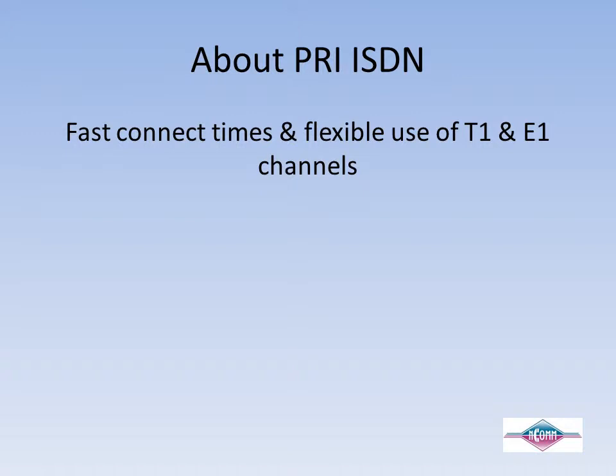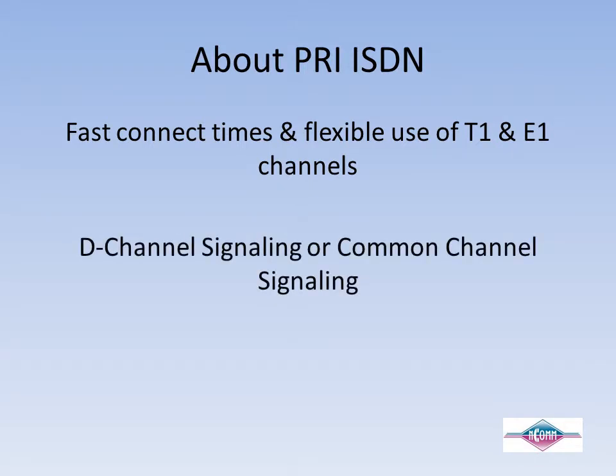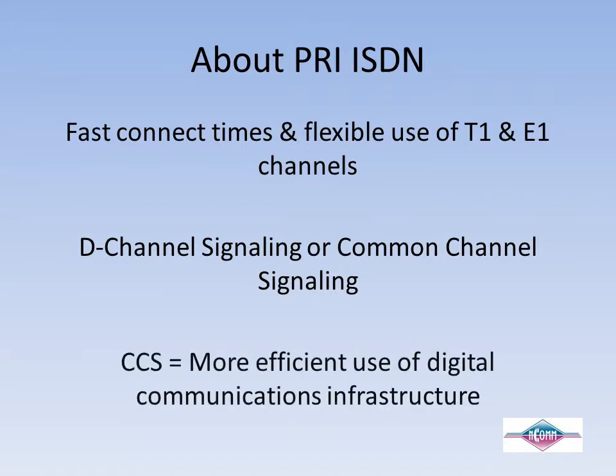Utilizing D-channel signaling, also known as common channel signaling, voice calls are established, taken down, and controlled without using the voice channels themselves. By dedicating channels for call control and faster bit rates, ISDN can make more efficient use of the digital communications infrastructure.